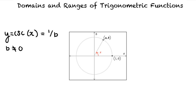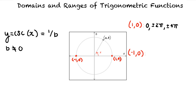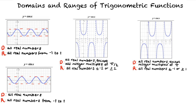B is equal to 0 at 1 comma 0 and negative 1 comma 0 on the unit circle. Since the point 1 comma 0 corresponds to the angles of 0, positive and negative 2 pi, positive and negative 4 pi, and so on, and the point negative 1 comma 0 corresponds to positive and negative pi, positive and negative 3 pi, positive and negative 5 pi, and so on, B is equal to 0 when x is an integer multiple of pi. This tells us that the domain of y equals the cosecant of x is the set of all real numbers except integer multiples of pi.